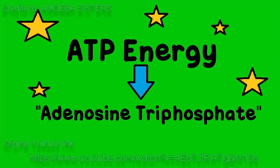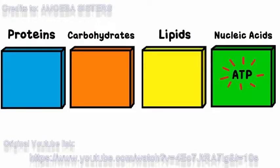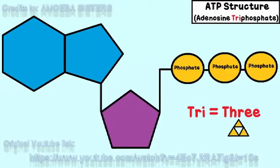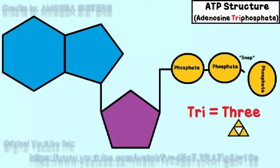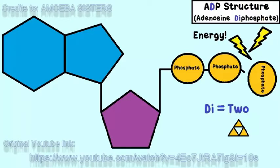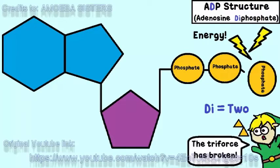ATP stands for adenosine triphosphate. It's a type of nucleic acid, actually, and it's action-packed with three phosphates. When the chemical bond that holds that third phosphate is broken, it releases a great amount of energy. It also is converted into ADP, adenosine diphosphate. And really, that's just a fancy way of saying that it has two phosphates after losing one.